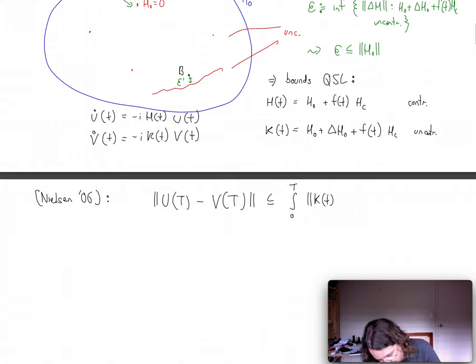So K of t minus H of t over the time from 0 to T. Now, of course, the way I've defined this here for the specific system is that when you subtract the two from each other, the time dependent control pulse cancels out, H0 cancels out.